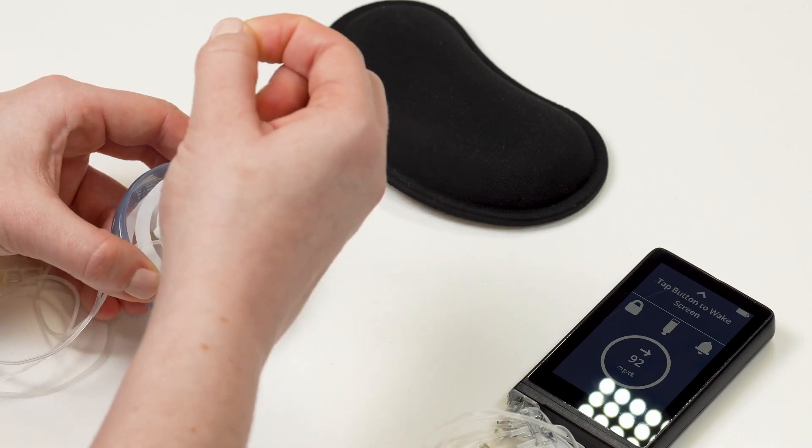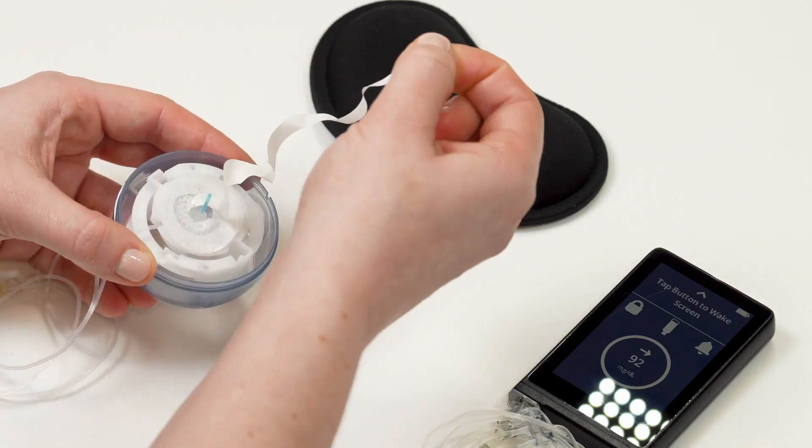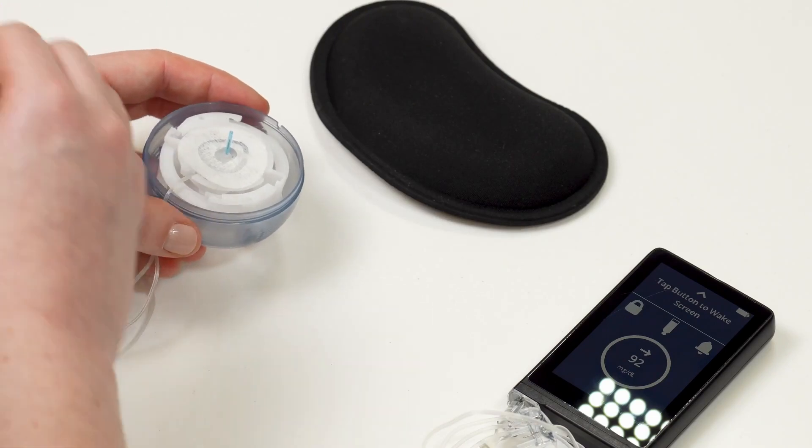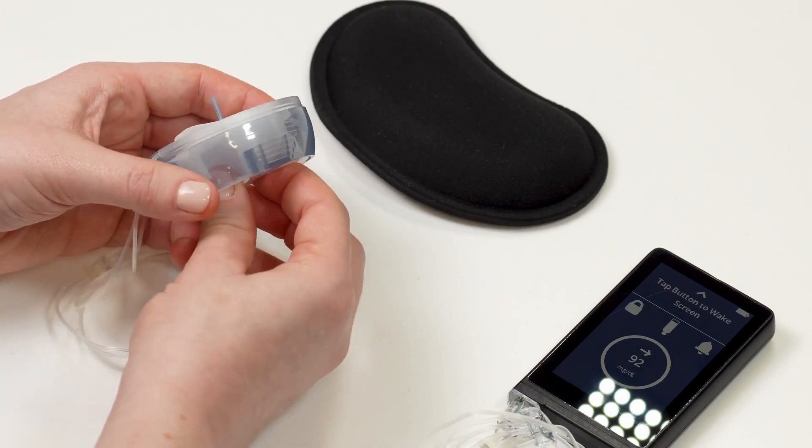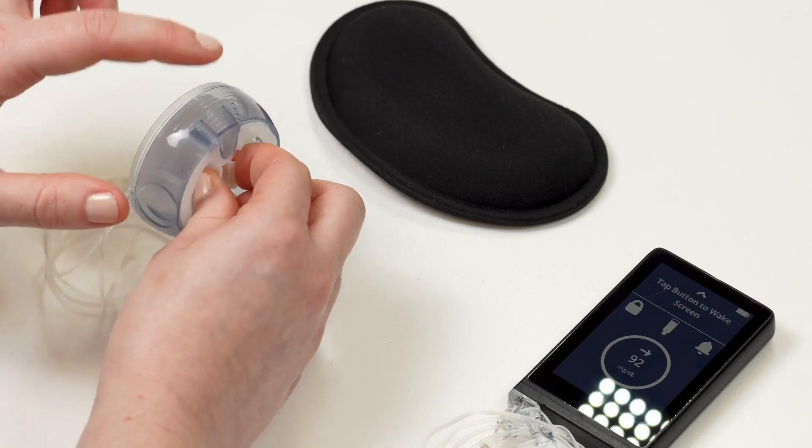Using the pull tab, slowly peel the adhesive backing off of the infusion set. Do not pull too quickly or you will pull the infusion set off of the inserter.